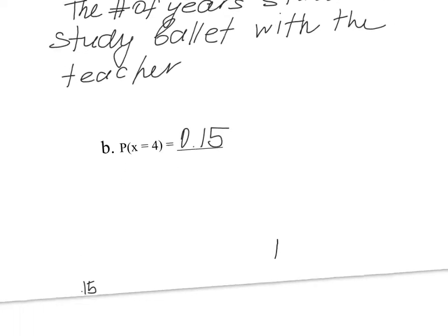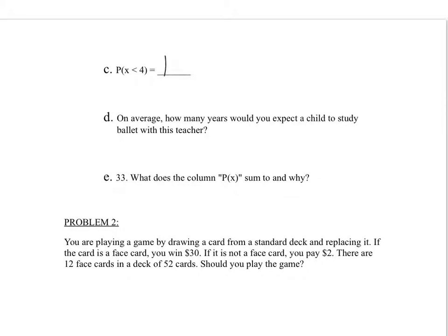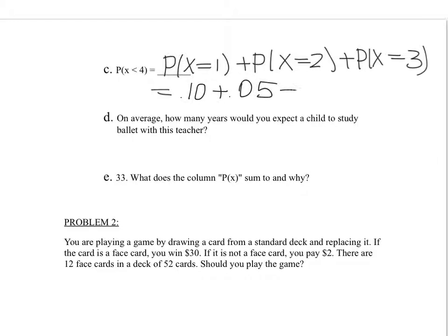Next question: find the probability that X is less than 4. First, let's understand what it means. Less than 4 would be the probability of X equals 1, or the probability of X equals 2, or the probability of X equals 3. We cannot include 4 because it's strictly less than 4. So getting back here, 0.10 plus 0.05 plus 0.10 gives me 0.25.